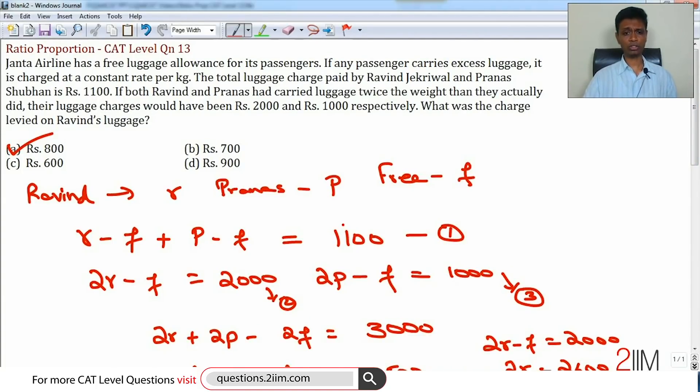Another way to think about this: for some luggage they pay 1100, for twice of that they pay 3000. This 1100 times 2 is 2200. They are paying 800 more than that.